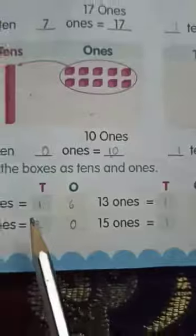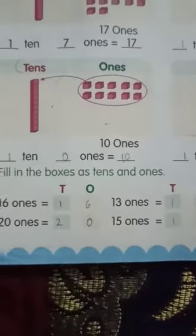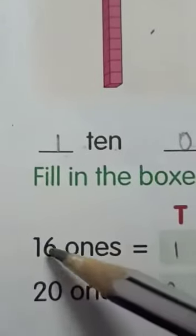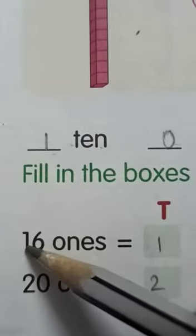Now, students, now you have to fill these boxes as tens and ones. Here, we have 16 ones. Now, on the ones place, we have 6 and on the tens place, 1.